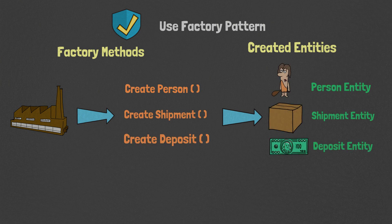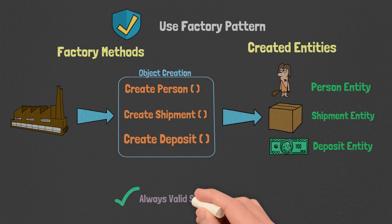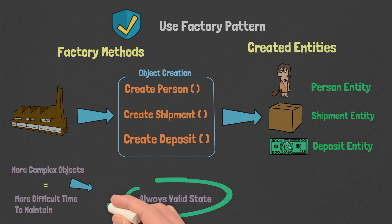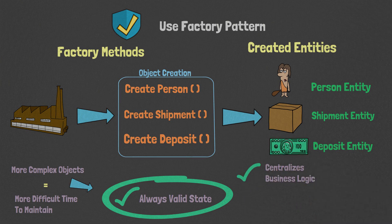Use the factory pattern for object creation. The factory pattern is a pattern that is responsible only for object creation. We use the factory pattern to ensure we're creating an object in an always valid state. As our objects become more complex, the task of creating objects in a valid state becomes more difficult. This means it's usually best to offload this responsibility to a specific method or class. The other benefit is that it centralizes the business logic and dependencies needed to create the object.